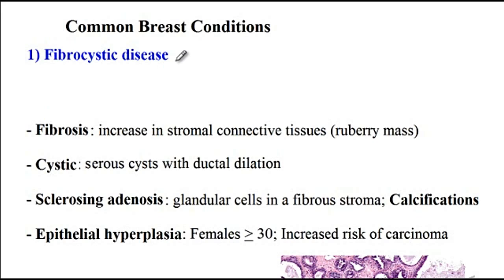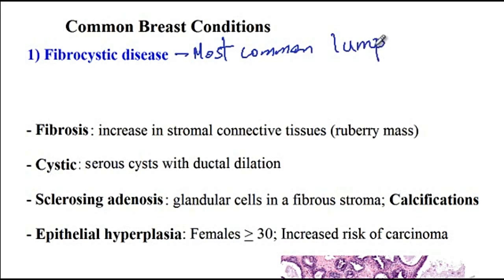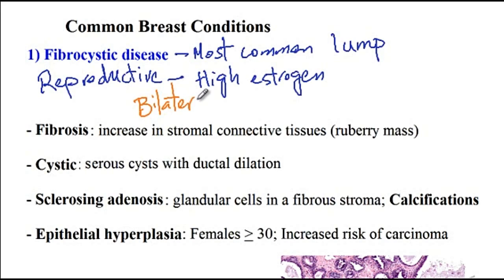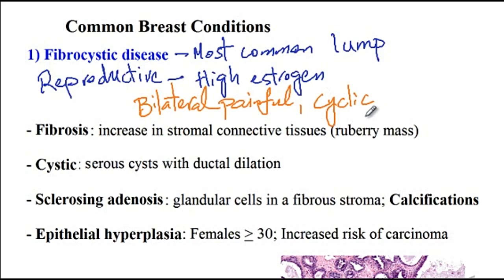Starting with fibrocystic disease — this is the most common cause of lump development in the breast. This condition usually develops during the reproductive age and is therefore thought to be related to high estrogen levels. These patients generally present with bilateral painful breasts, and the pain is usually more prominent before menstruation, so the pain varies with the menstrual cycle.